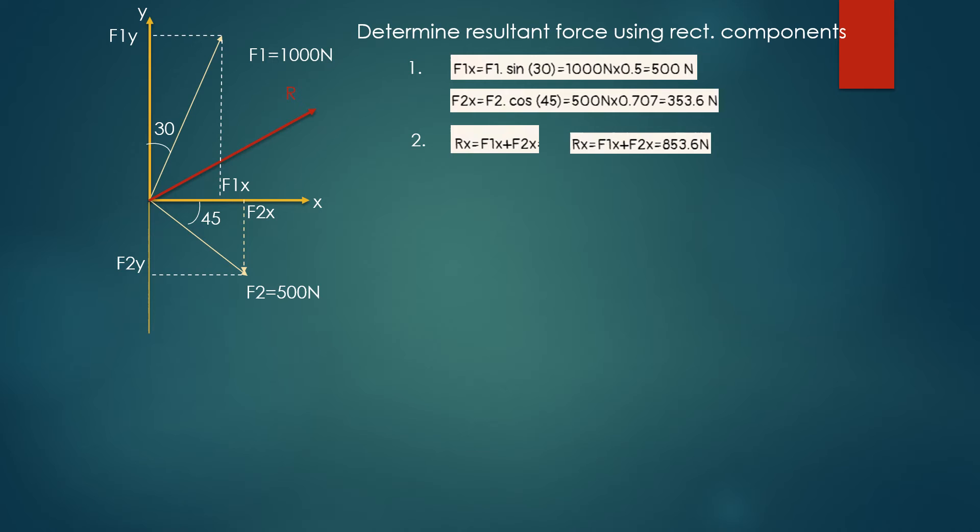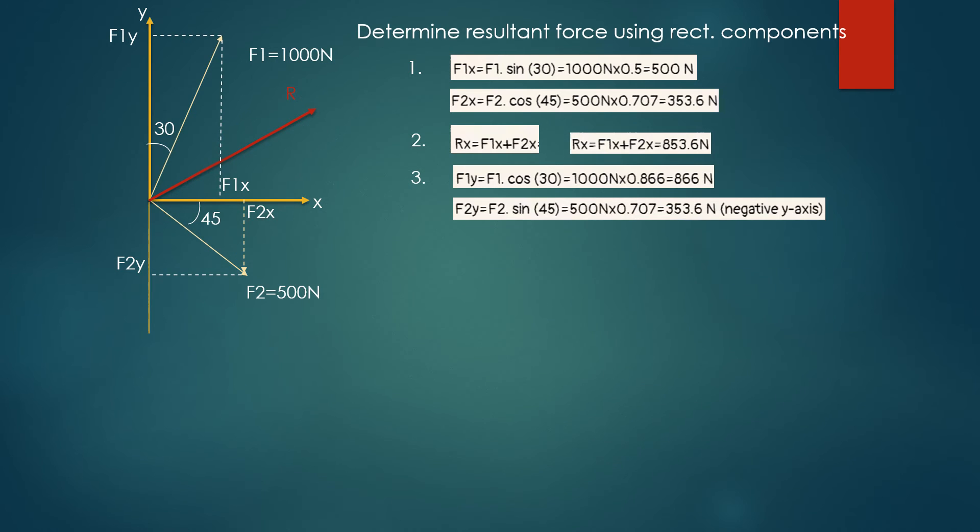For F1y, we have F1 times cosine of 30 degrees, which equals 866 N. F2y equals F2 projected along the y-axis, which is F2 times sine of 45 degrees, equal to 353.6 newtons along the negative y-axis.